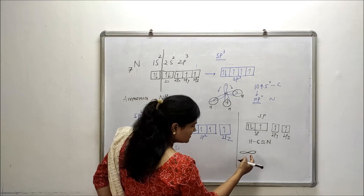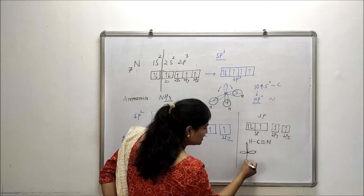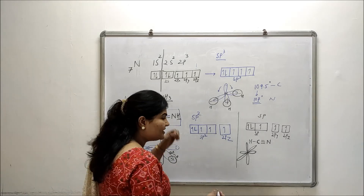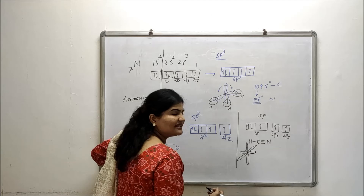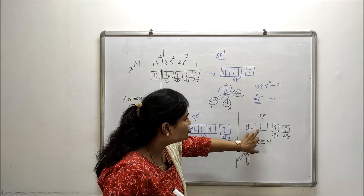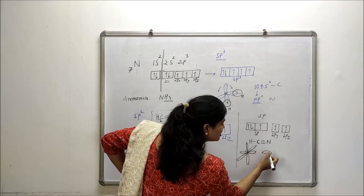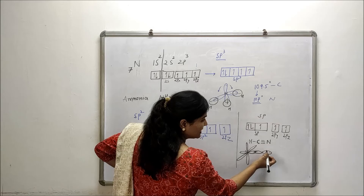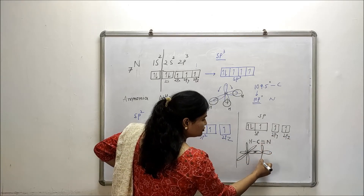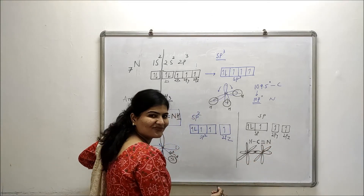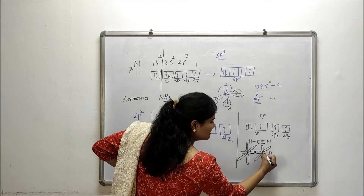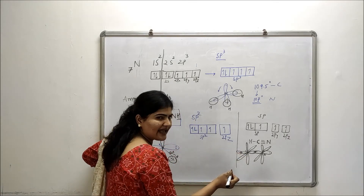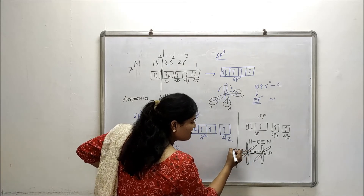Now let's draw nitrogen in sp hybridization. For nitrogen in sp, only 2 hybrid orbitals are formed. One of them holds the lone pair, and the other one forms a sigma bond with carbon. Nitrogen also retains an unhybridized 2py and 2pz. Carbon forms a sigma bond with hydrogen using sp of carbon and s of hydrogen.